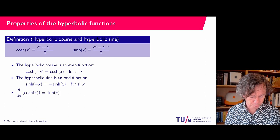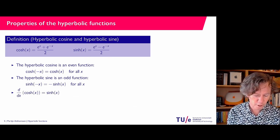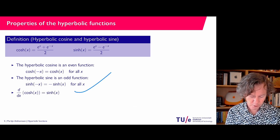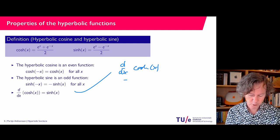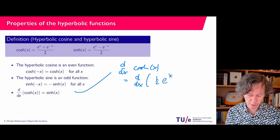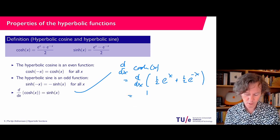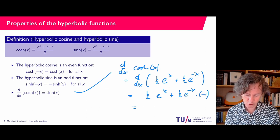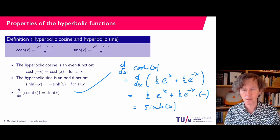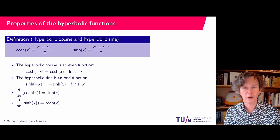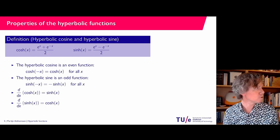A slightly more interesting property: if you differentiate cosine hyperbolic, you get sine hyperbolic. The derivative d/dx of cosine hyperbolic x equals d/dx of one-half e to the power x plus one-half e to the power minus x, which gives one-half e to the power x minus one-half e to the power minus x — with the chain rule contributing a minus one — and this is precisely sine hyperbolic x. Similarly, if you differentiate sine hyperbolic, you get cosine hyperbolic.